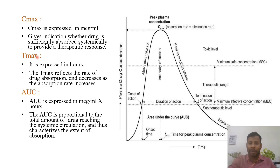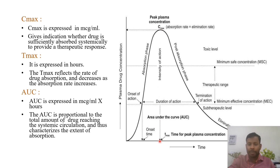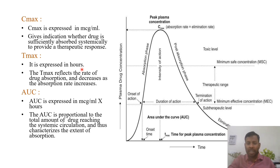Next, Tmax — time for peak plasma concentration. The time corresponding to Cmax is called Tmax. From Cmax, if you draw a line to the x-axis, that point will be Tmax. It is expressed in time units — hours, minutes, or seconds.